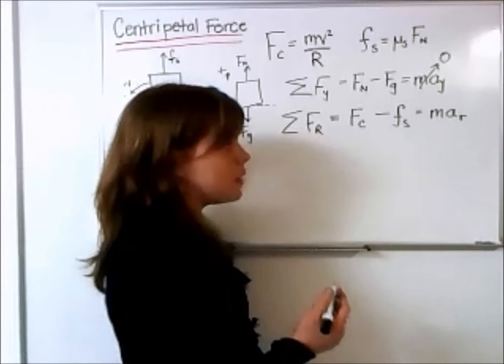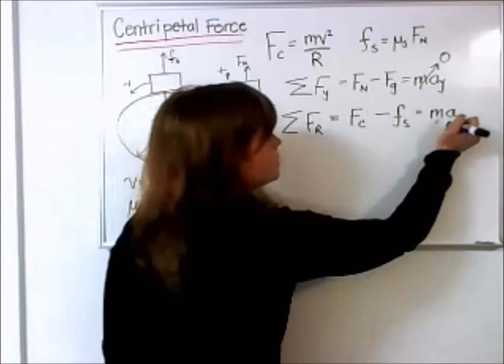It's equal to the mass times the acceleration in this radial direction. The car is not accelerating, it has a constant velocity, so this will simply be zero.